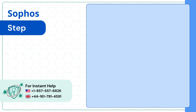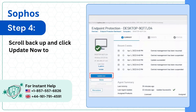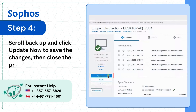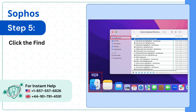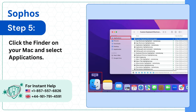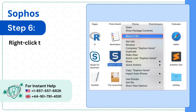Step 4. Scroll back up and click Update Now to save the changes, then close the program. Step 5. Click the Finder on your Mac and select Applications. Step 6. Right-click the Sophos icon and click Move to Bin.